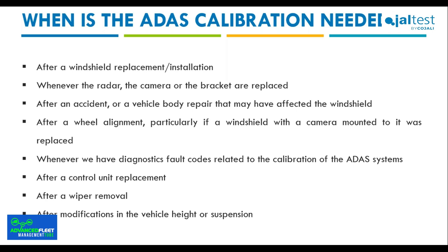Let's look at circumstances that require calibration or reset of these systems. One of the most common is after windshield replacement or installation of a new windshield. Also, whenever the radar, camera, bracket, or camera support is replaced. If there has been an accident or vehicle body repair that has affected the windshield, calibration will be needed. Additionally, after a wheel alignment — particularly if the windshield with a mounted camera was replaced — or whenever fault codes related to calibration appear, or when changing the vehicle's ride height or suspension.